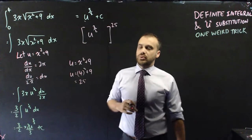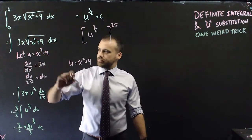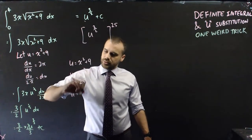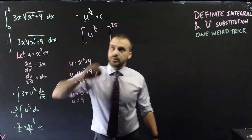And I can put the value 25 in there. Now, if I want 0 where my x value is, I can say that u equals 0 squared plus 9, u equals 9.